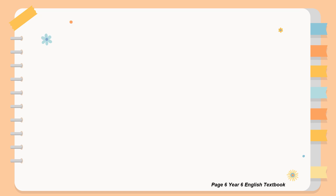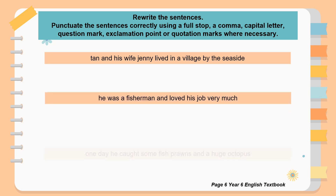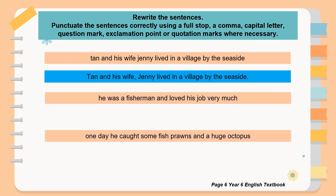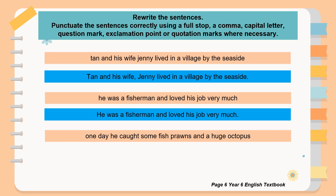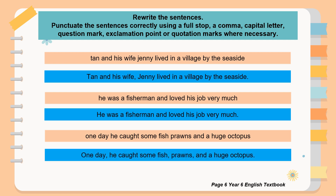All right, now let us check our answers together. The first one: 'Tan and his wife Jenny lived in a village by the seaside.' He was a fisherman and loved his job very much. 'One day, he caught some fish, prawns, and a huge octopus.'